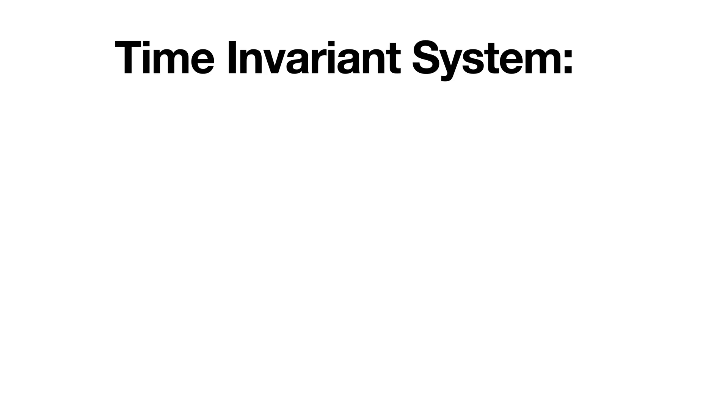Hey everyone, welcome back to Signal Processing with Paul and today we're going to talk about time-invariant systems. A time-invariant system is a system where the output of the system does not depend on when the input is placed into it.